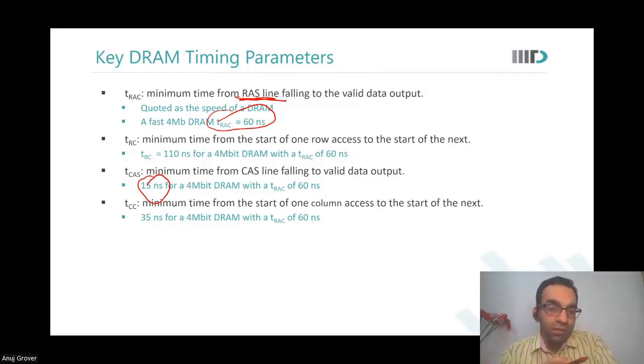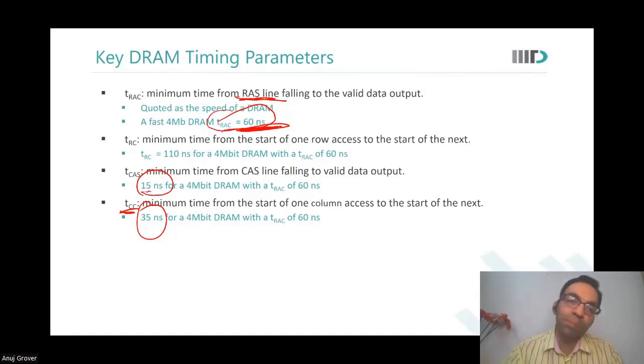Why? Because now since sense amplifier output is already there, all that you need to do is do some address decoding and select which bit to give out. Whereas for the first timing, you not only had to do the decoding of the row region, that is the row decoder, but also discharge the bit line, activate the sense amplifier, and then give an output. So TRAC is therefore greater than TCAS. And then TCC is the minimum time from the start of one column access to the start of next. What do you think this would involve? Why do you think there is this extra gap between TCAS and TCC? What extra stuff would be involved there?